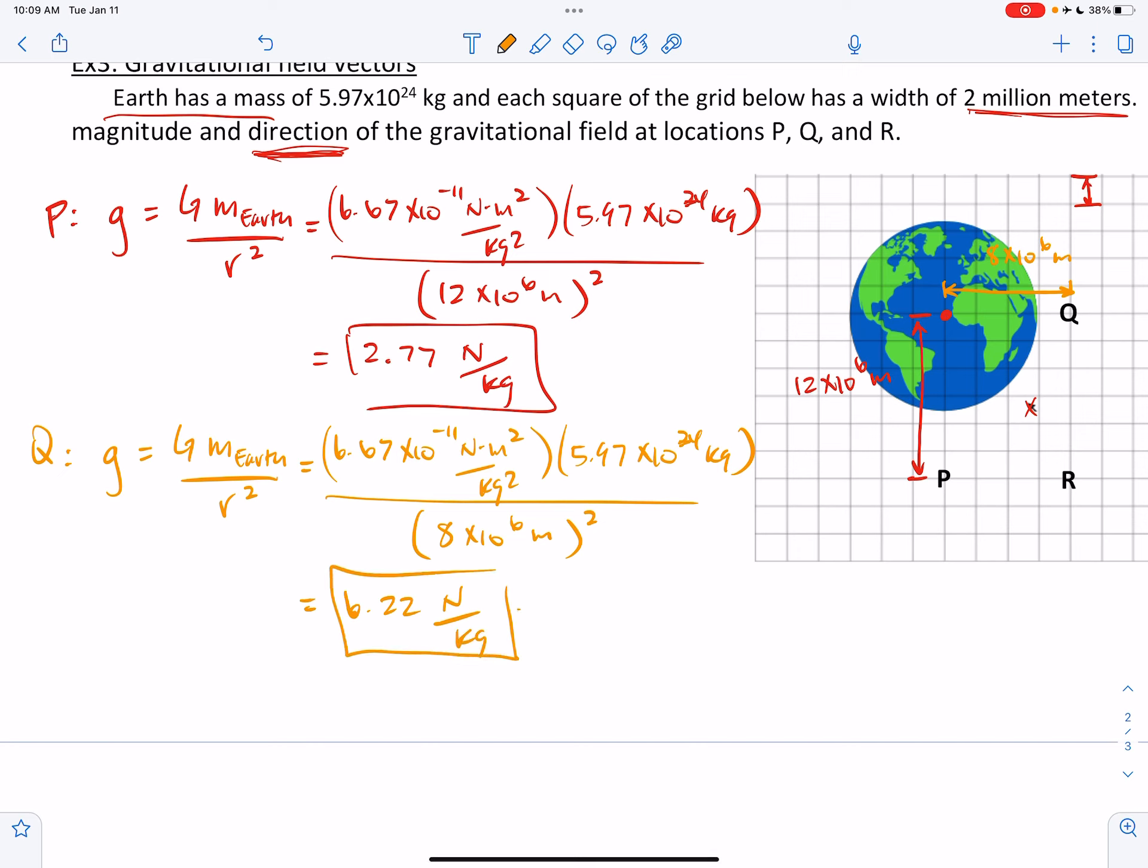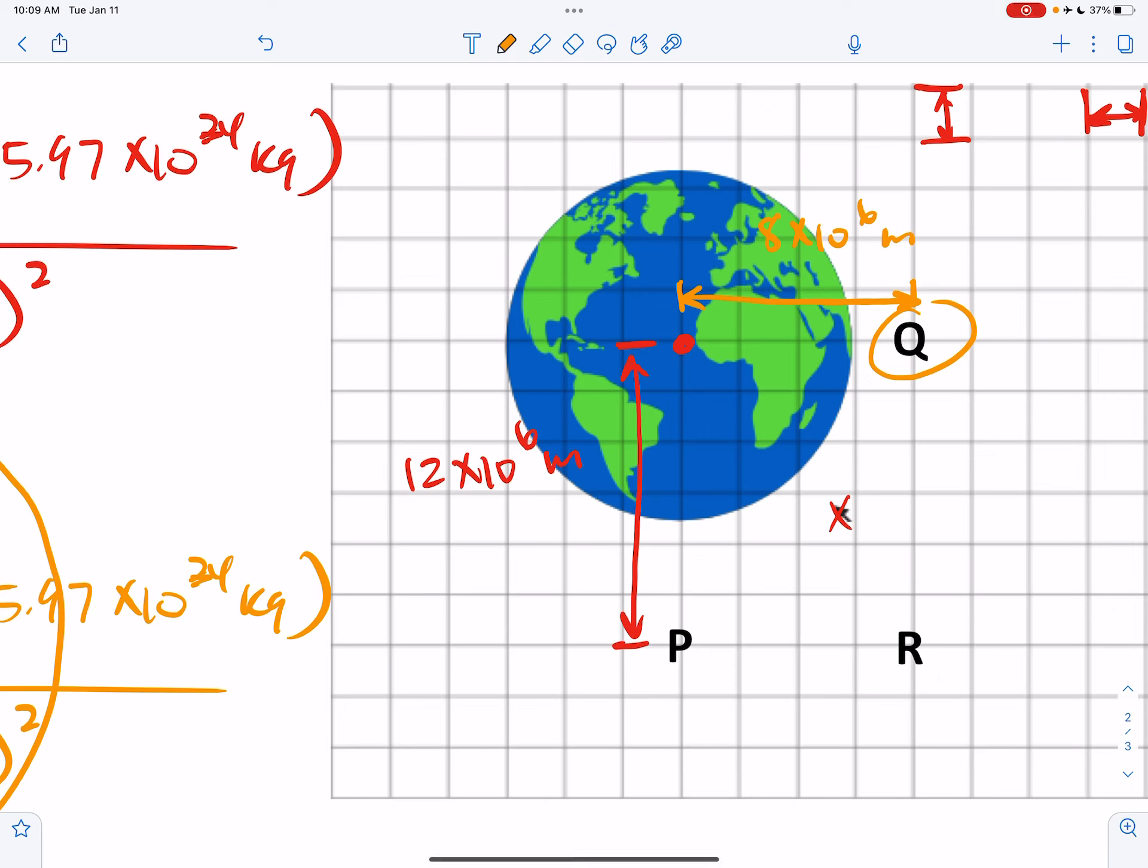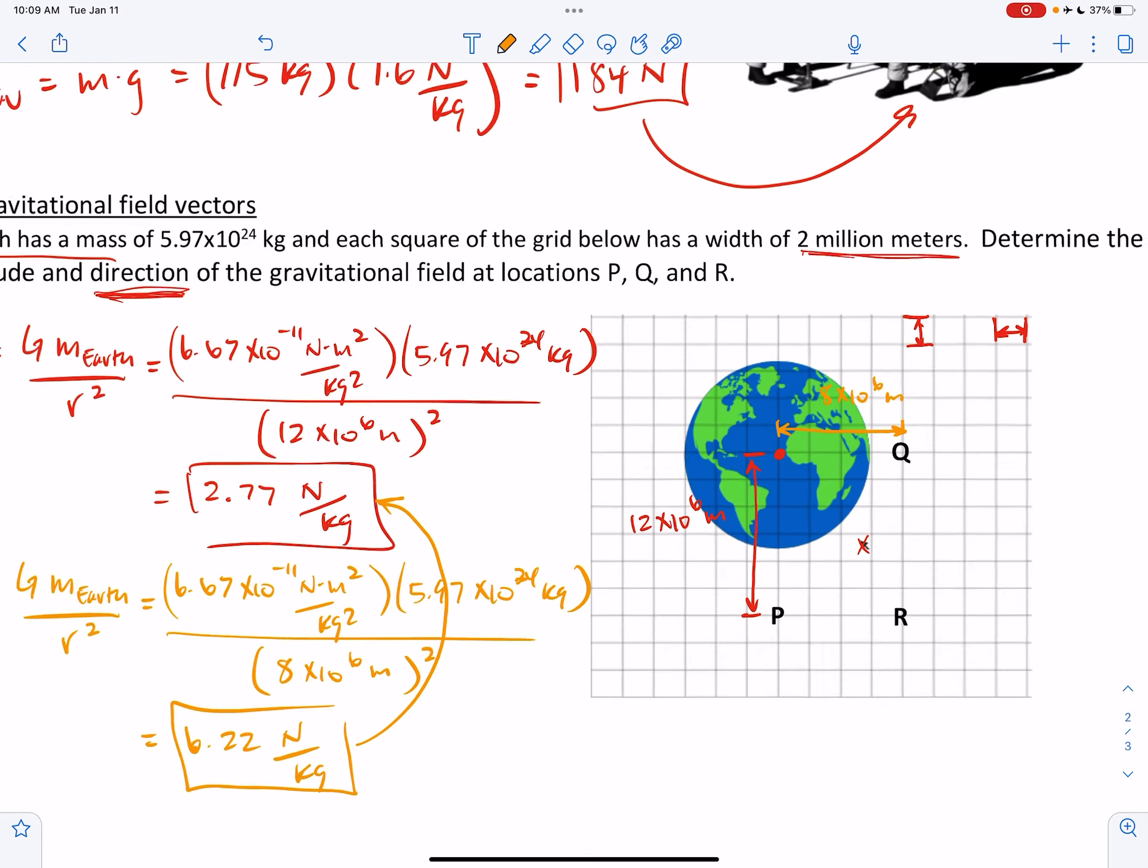So wait a second. Compared to here, we got stronger field strength. Well, look, location Q is closer to the center of the Earth than location P was. So that makes sense. We would expect the gravitational field to be stronger at Q.